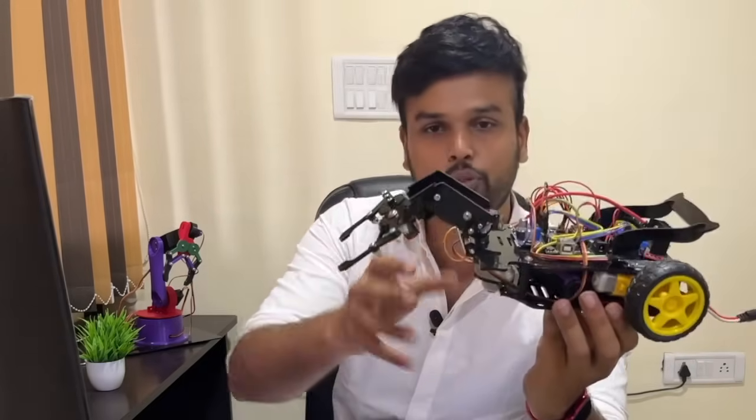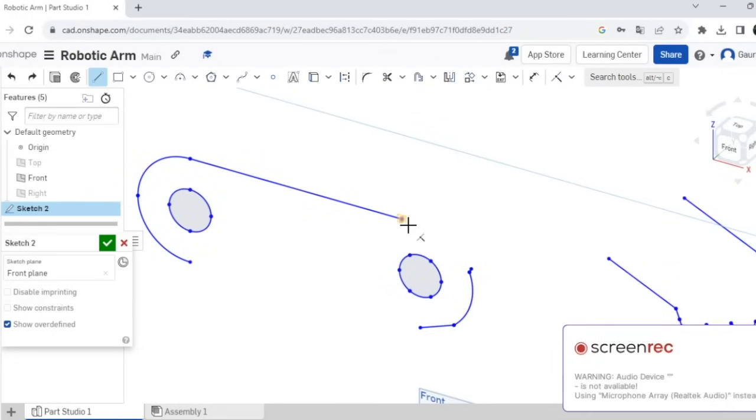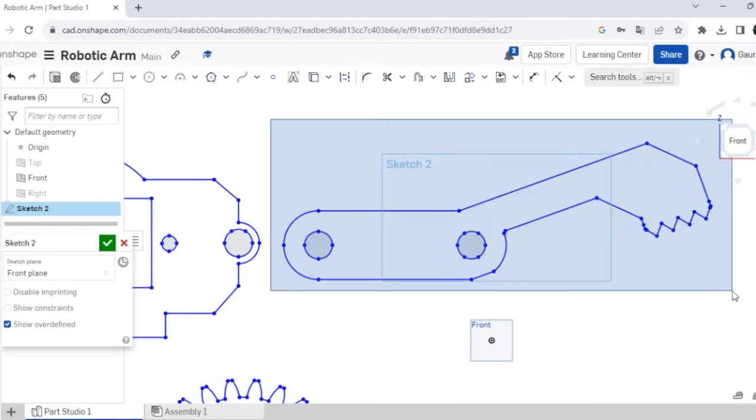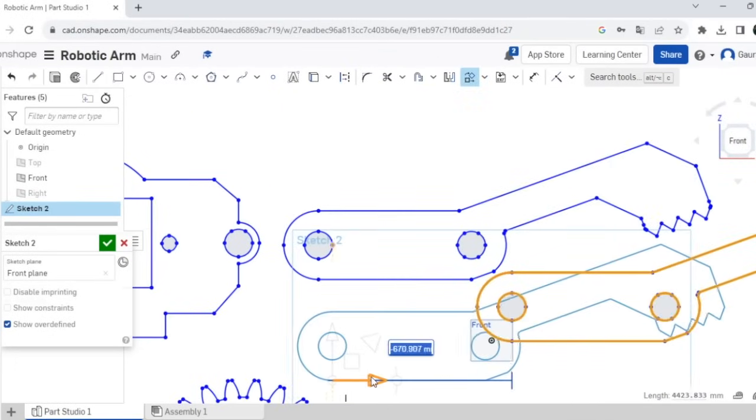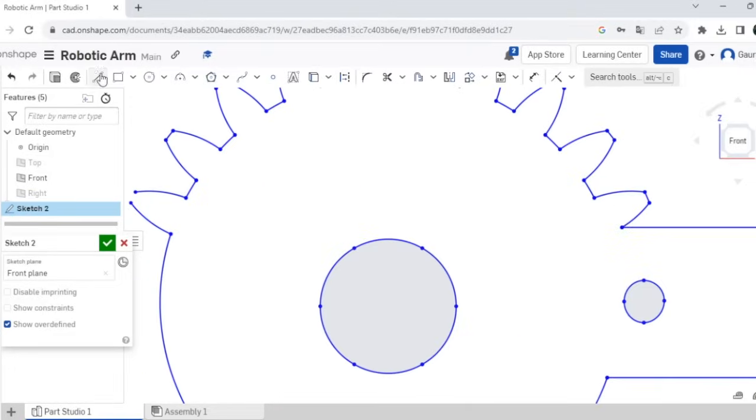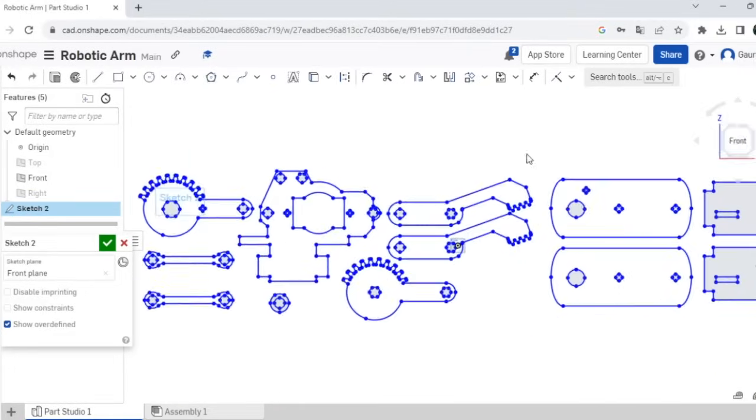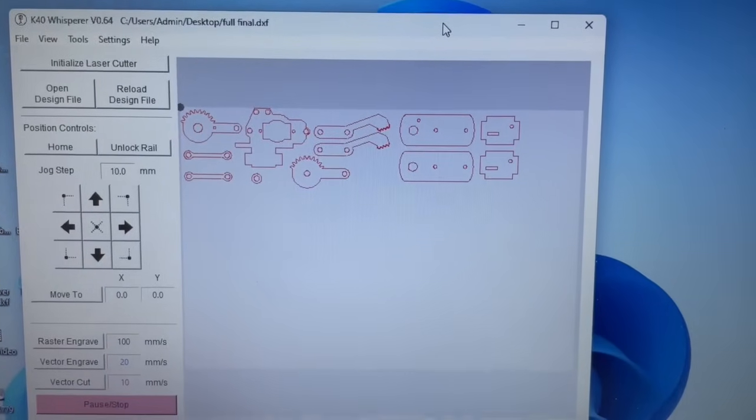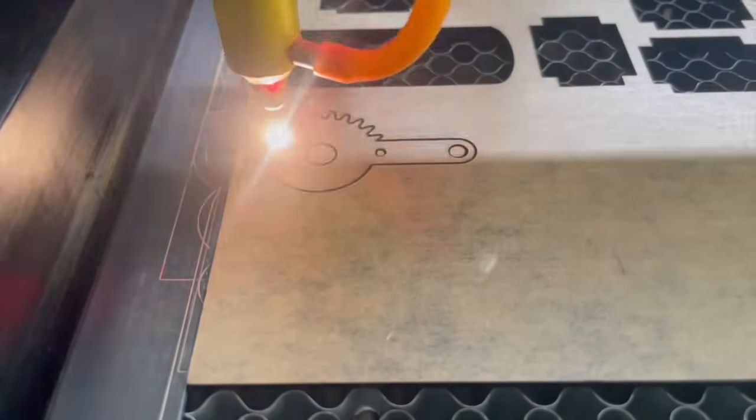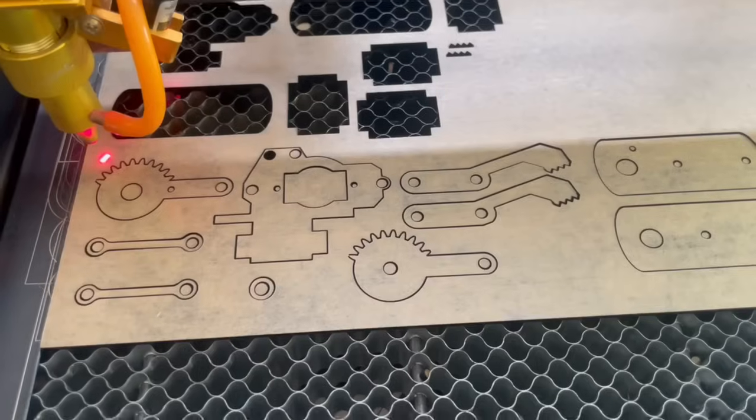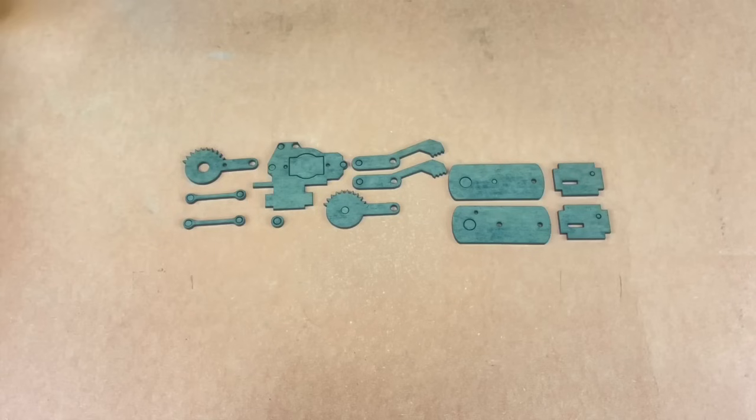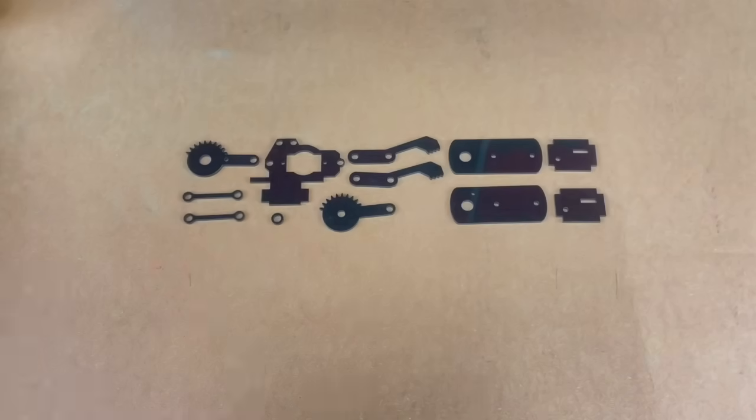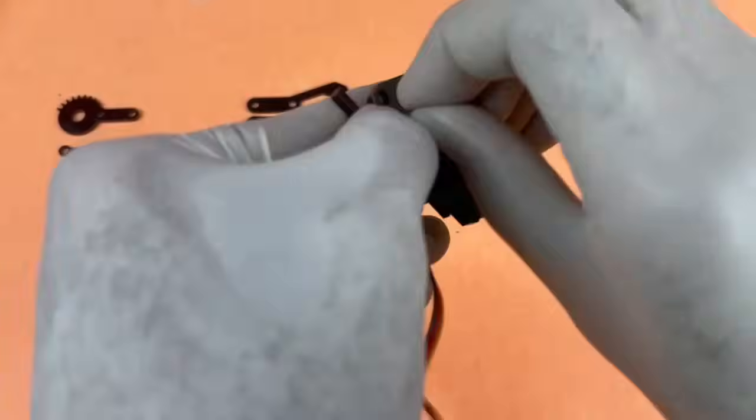Now coming back to our project, the main thing is this robotic arm which you can see over here. We started the project by designing this one on OnShape. The complete 3D model was done on OnShape and then we used K40 Whisperer to send it to our laser cutting machine and cut the required acrylic parts.